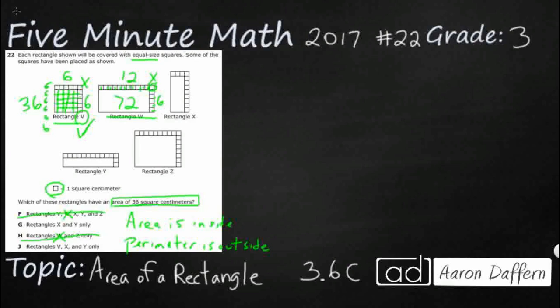Let's look at X. 1, 2, 3, 4 and then 1, 2, 3, 4, 5, 6, 7, 8, 9. So 4 times 9, that is going to work. That is 36 square centimeters, so rectangle X is a go.